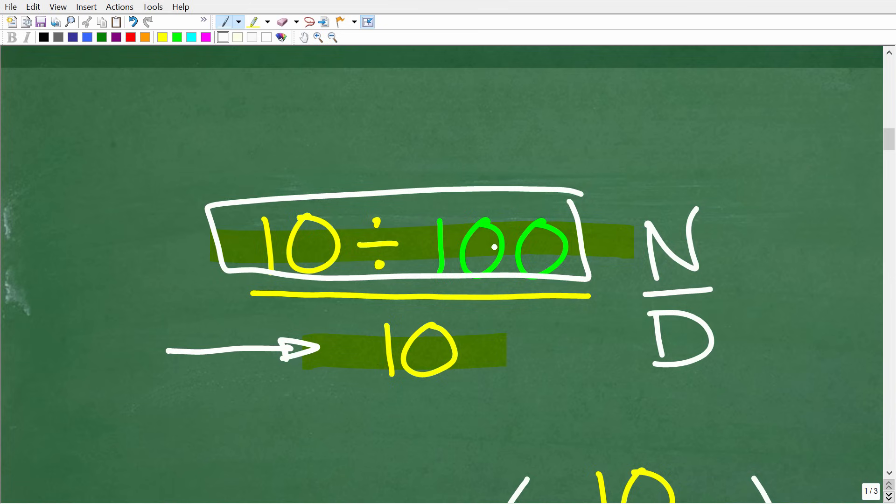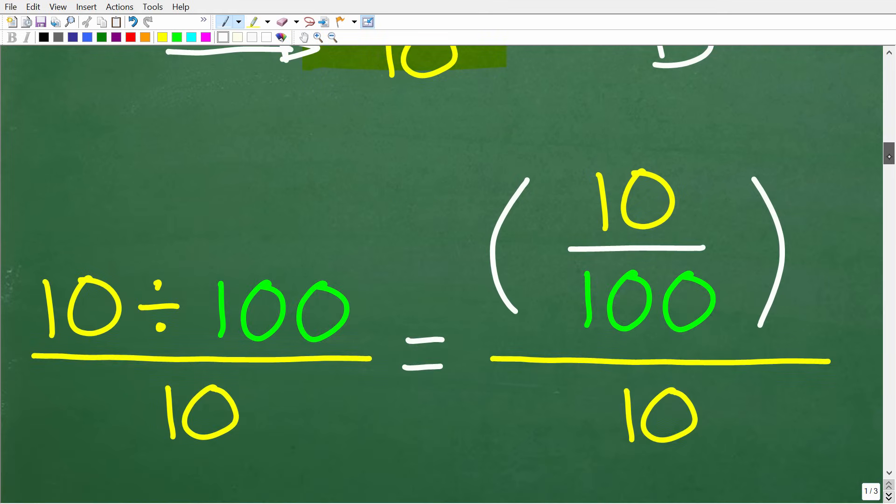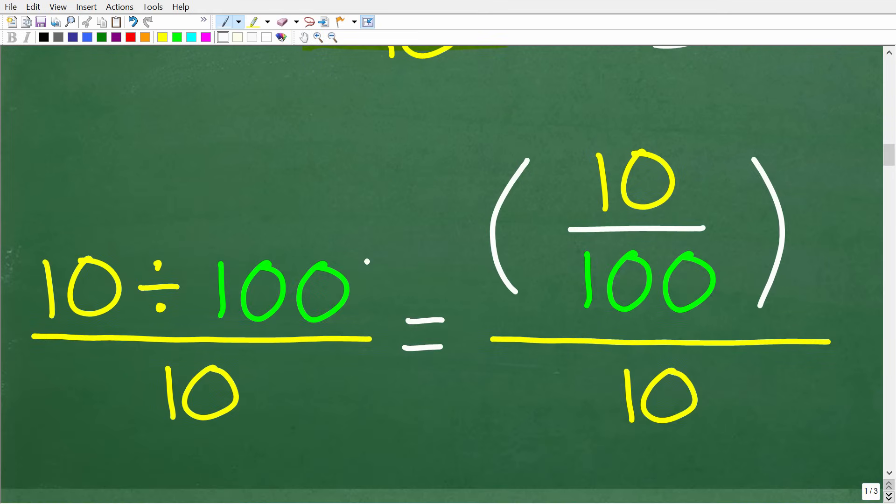Okay, so 10 divided by 100, what is that? Well, we can write that differently. We can think of 10 divided by 100 this way. So we have 10 divided by 100. So remember, the division operator is the same thing as the fraction bar. So instead of writing 10 divided by 100 this way, we can think of it this way. So we have 10 divided by 100. All of this will be divided by 10.